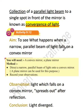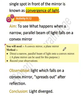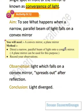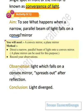Activity 9.12 — here we are going to see what happens when a narrow parallel beam of light falls on a convex mirror. First we discussed about the concave mirror; now we are going to see what happens when we do the same practical but with a convex mirror.